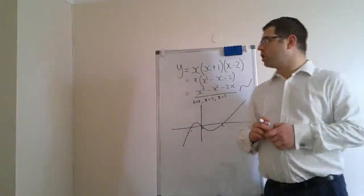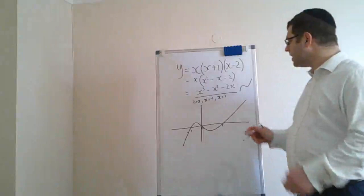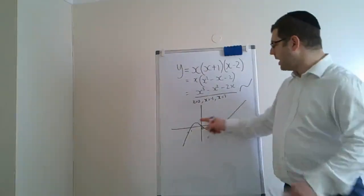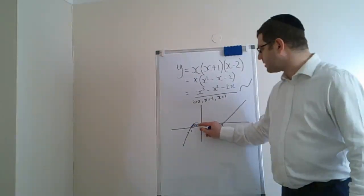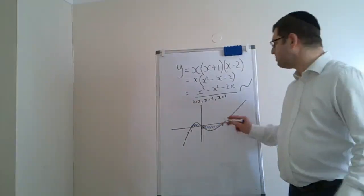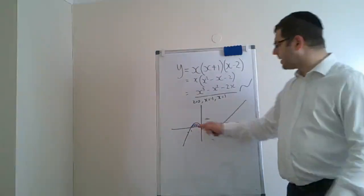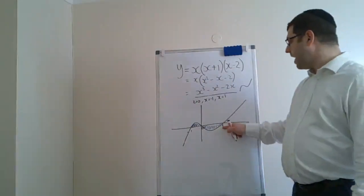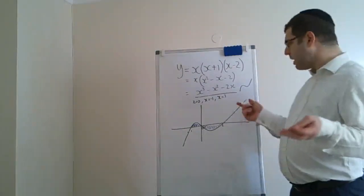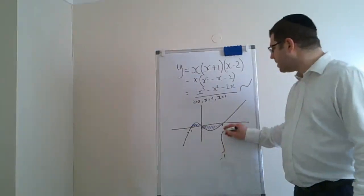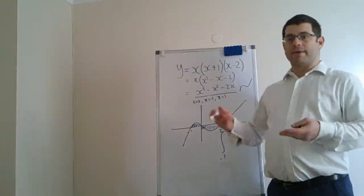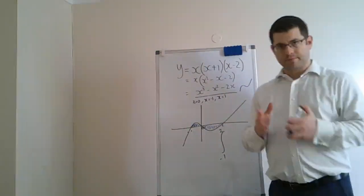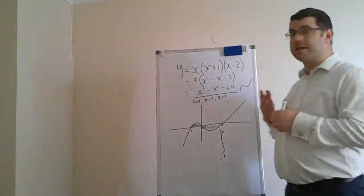Now if an exam question asks you to find the finite area between this cubic graph and the x-axis, you'll notice there is a part of the finite area above the x-axis and a part below. You might think you can find the complete area by integrating between x = −1 and x = 2, sweeping the whole area in one go — just as you would for a graph that stays above the x-axis.